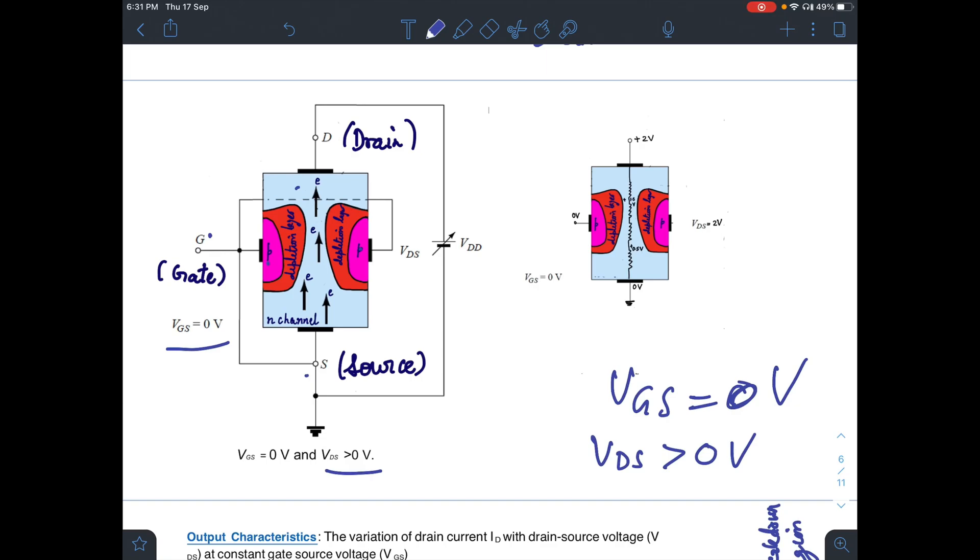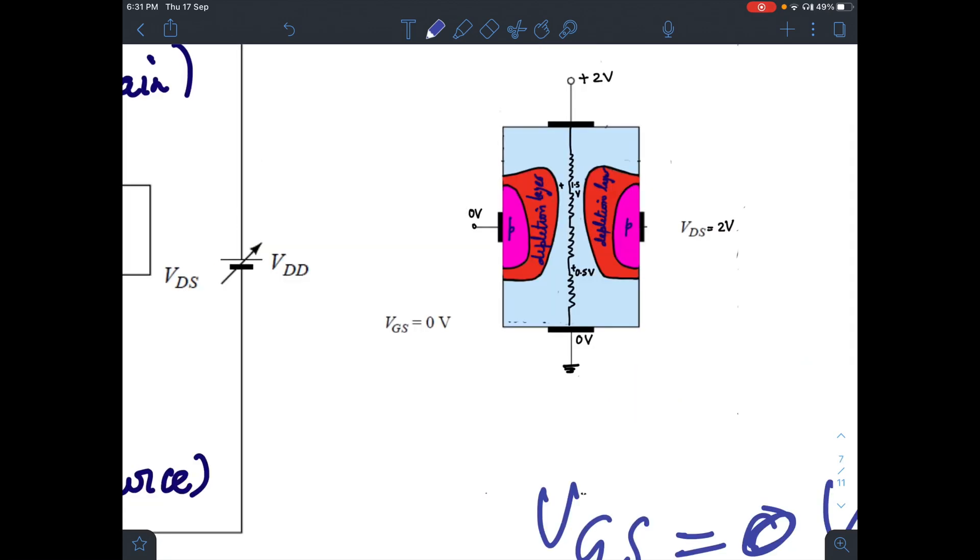But the shape of this depletion layer is not uniform. This is wider towards drain and lower here. Why? Because you can imagine the channel as if it consists of small resistances, as the only limitation to the flow of electrons will be the resistance in the channel.